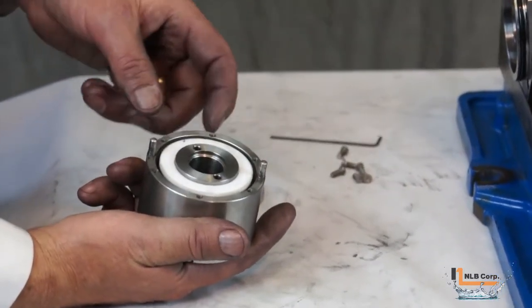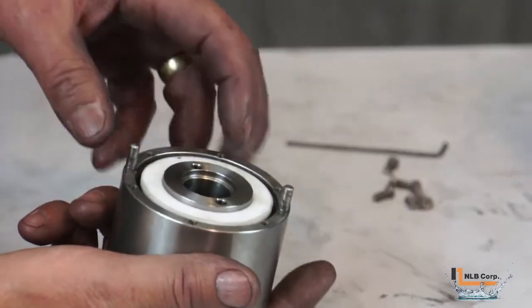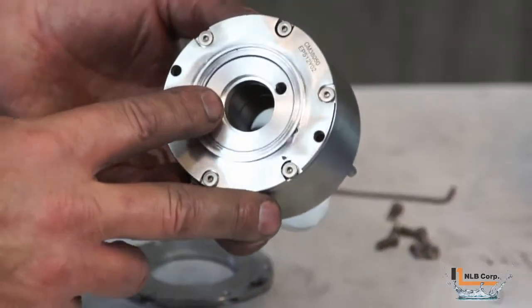With it removed, you can see the portion of the gear assembly that accepts the shaft. On one side it's stainless steel, and on the other it's aluminum.